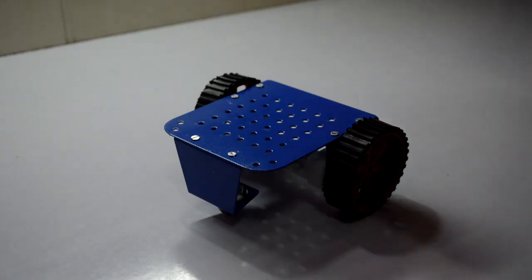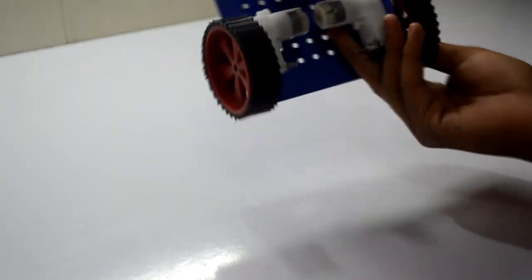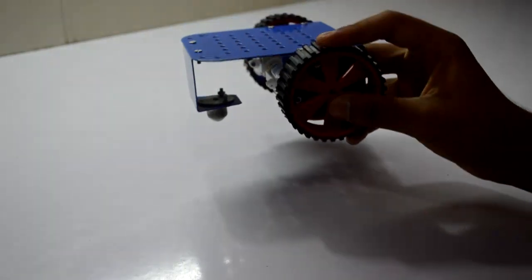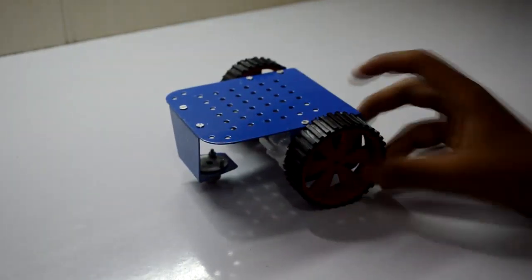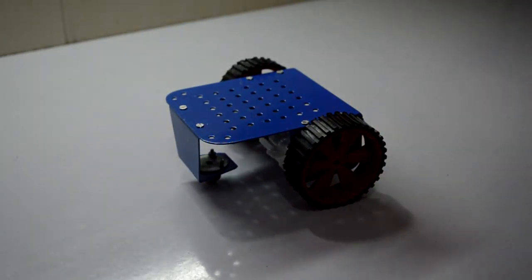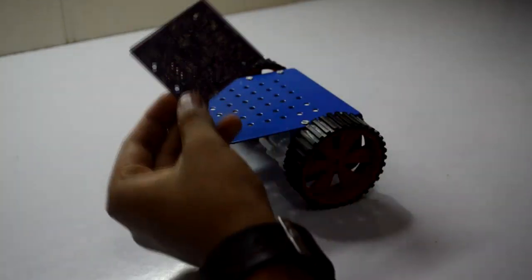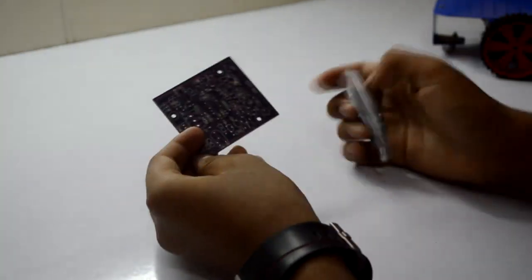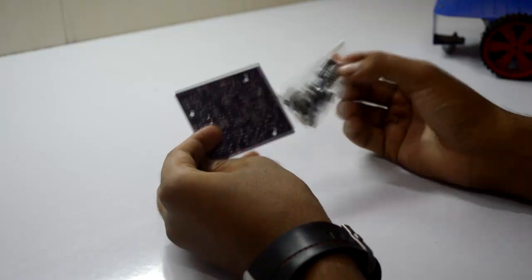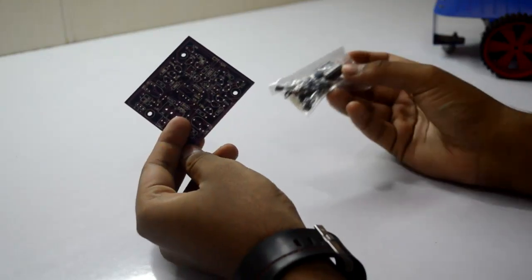Here we go, we have completed the assembly of the chassis. It has the motors and these are the tires. After we have completed the assembly, let's move on to the connections. This is basically the PCB and these are the components, so let's go ahead and start with the connections.